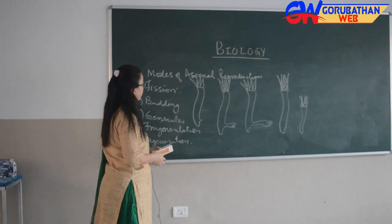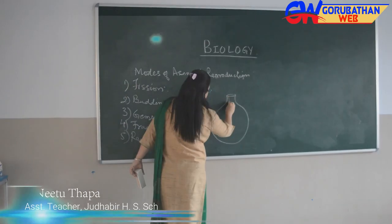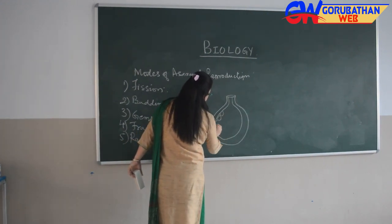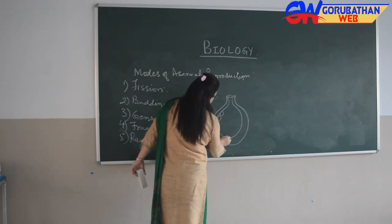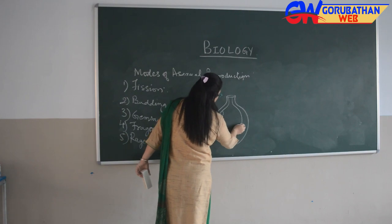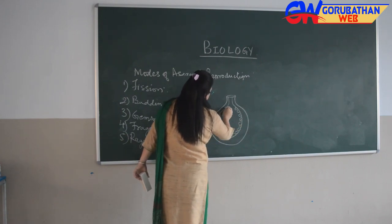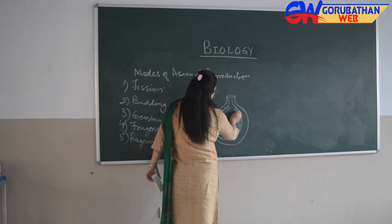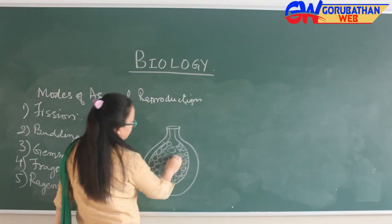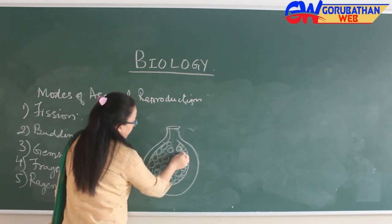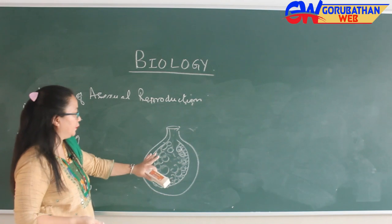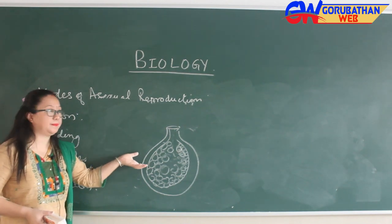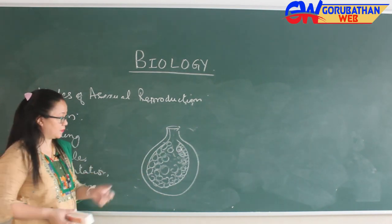Another mode is gemmules. It is a strange mode of asexual reproduction caused by the formation of internal buds. Finally, these buds get separated from each other and will develop into new individuals. This is a method of overcoming unfavorable conditions like extreme cold and drought.